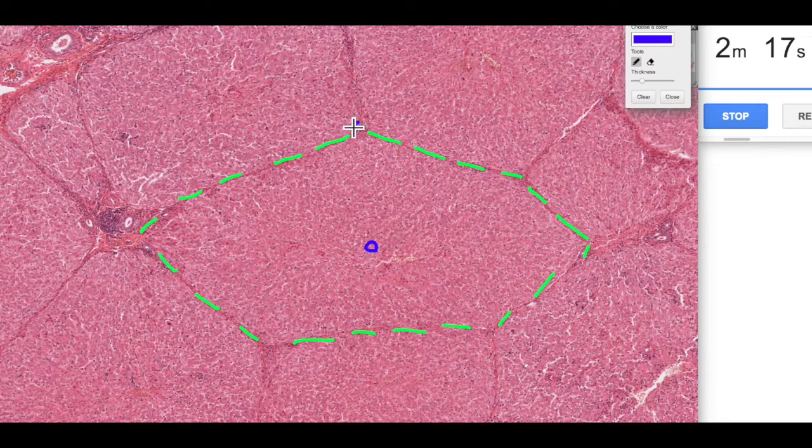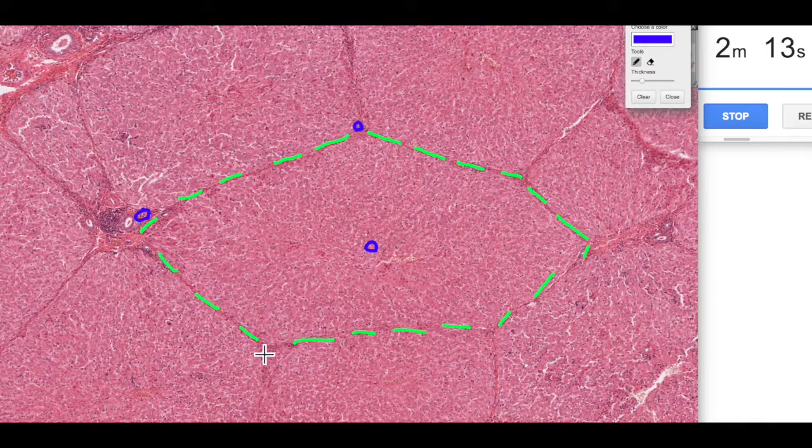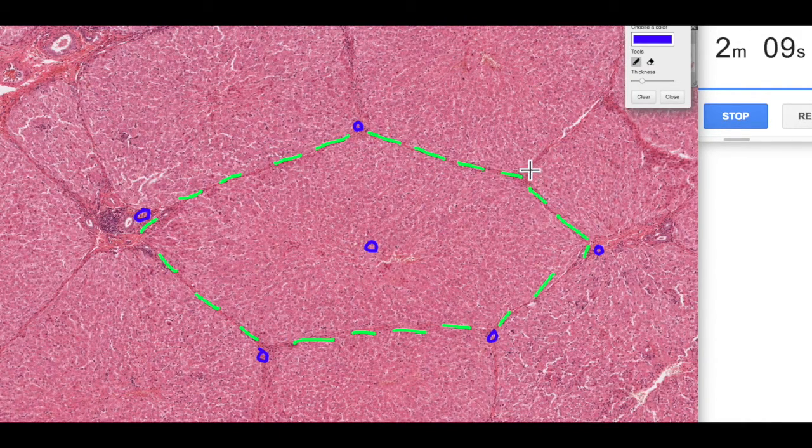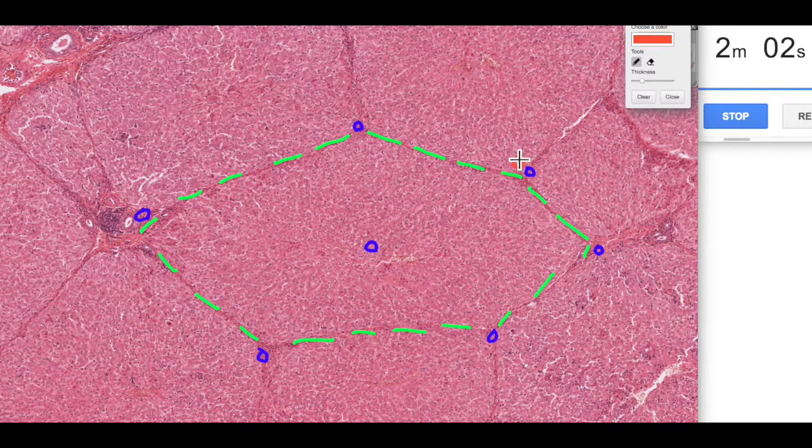Within the portal regions and the portal triads, we have our branches of the hepatic portal vein, which I'm indicating in blue here. We also have, remembering we have a dual blood supply in the liver, branches of our hepatic arteries.